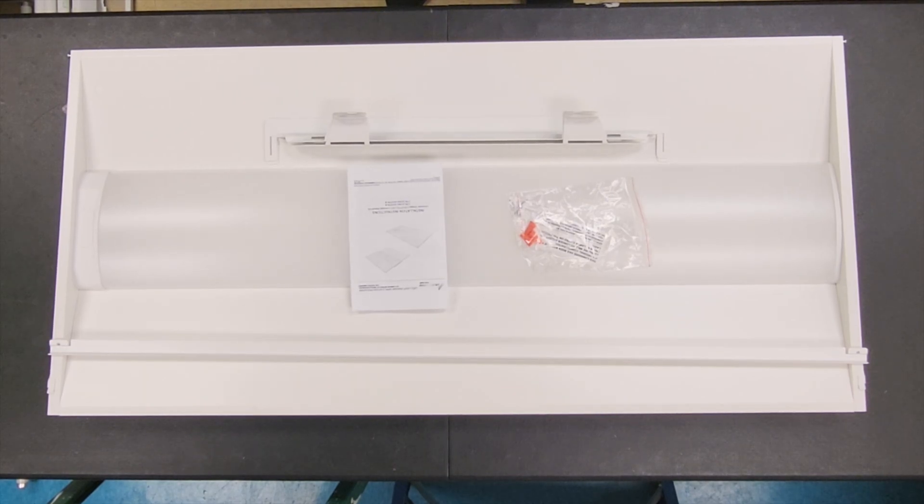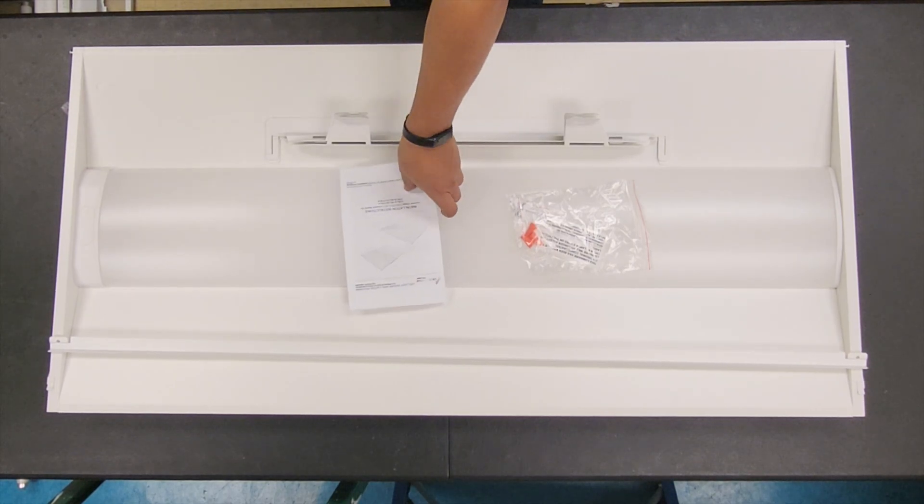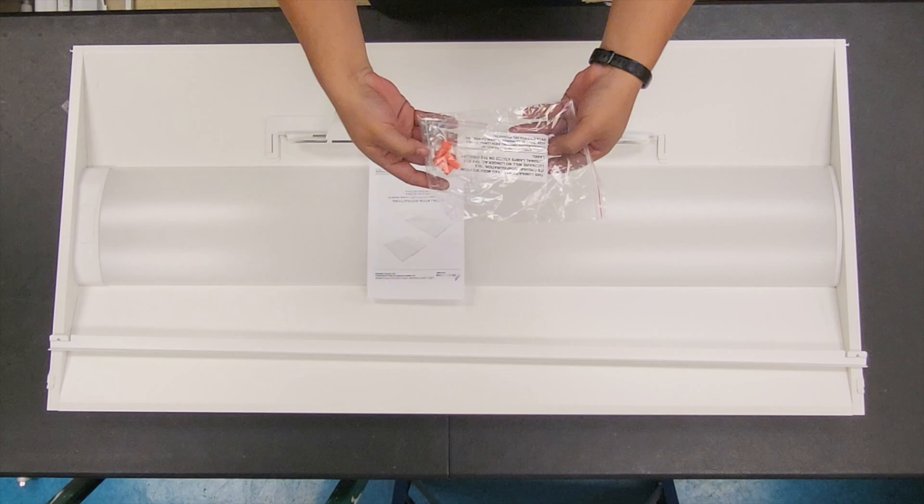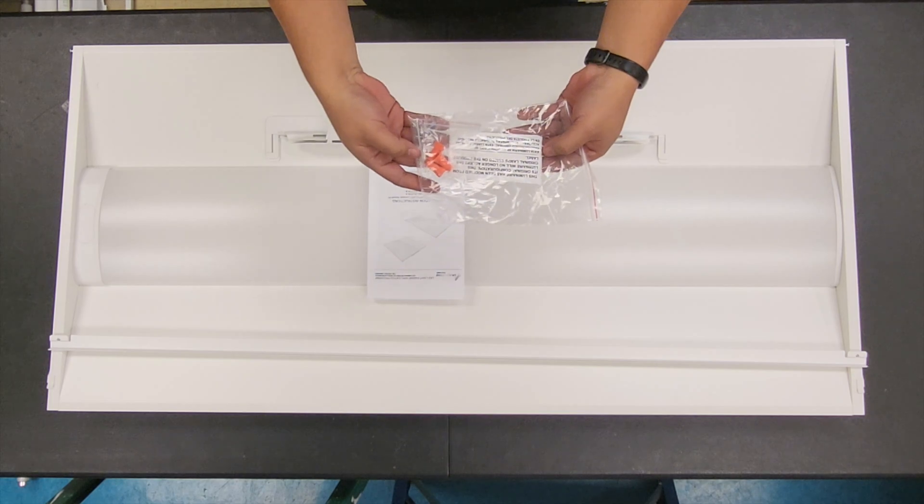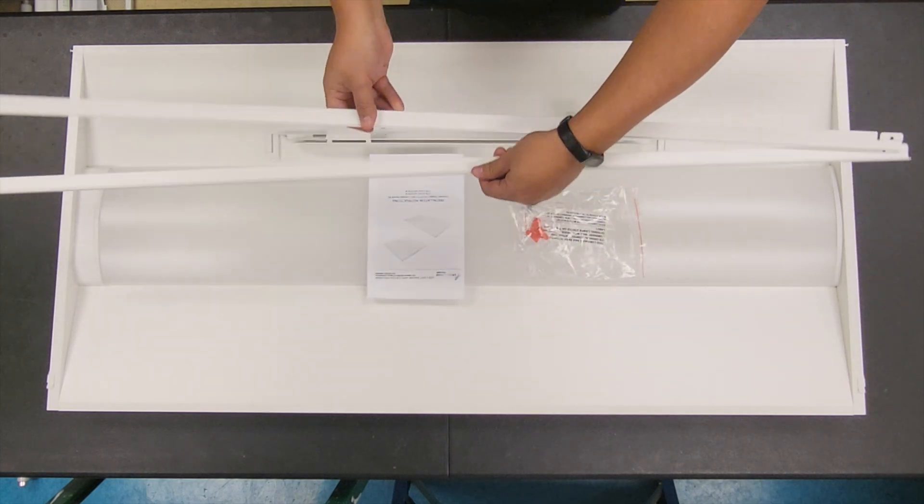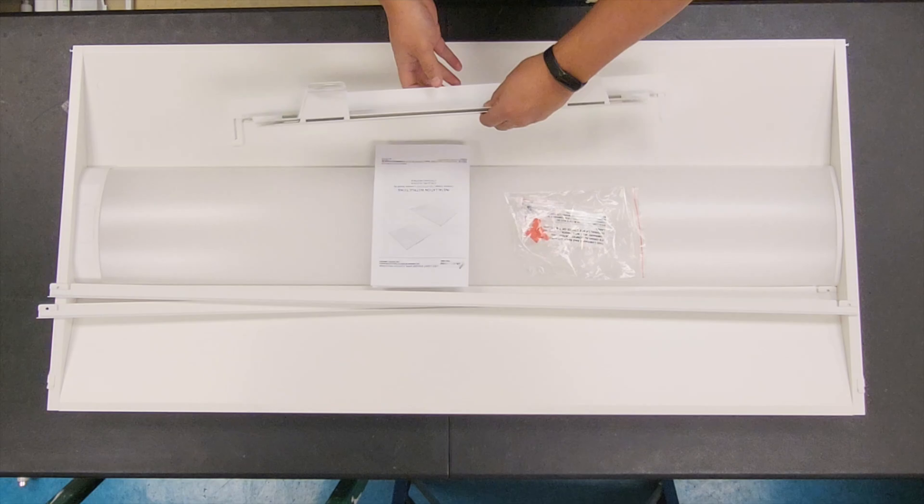The TR-24 retrofit kit for 2x4 luminaires will come with the retrofit kit itself, a small booklet of installation instructions, and a bag containing the wire nuts, self-tapping screws, and the retrofit kit label. Lastly, the kit will come with two side mounting brackets as well as two end brackets.